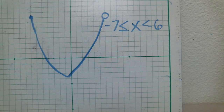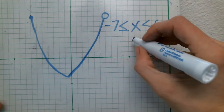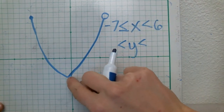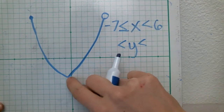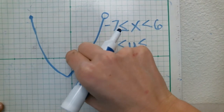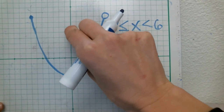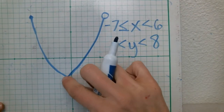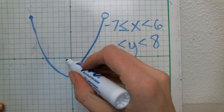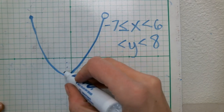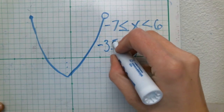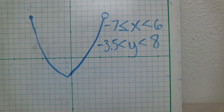For the range, I'm looking at the up and down y values. The largest y value is 8, and the smallest y value is about negative 3.5. So the range for this graph would be approximately negative 3.5 less than or equal to y less than or equal to 8.